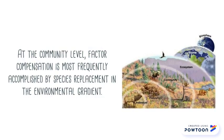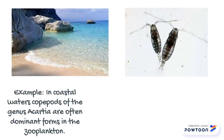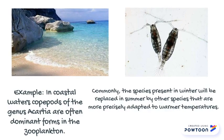At the community level, factor compensation is most frequently accomplished by species replacement in the environmental gradient. For example, in coastal waters, copepods of the genus Acartia are often dominant forms in the zooplankton. Commonly, the species present in winter will be replaced in summer by other species that are more precisely adapted to warmer temperatures.